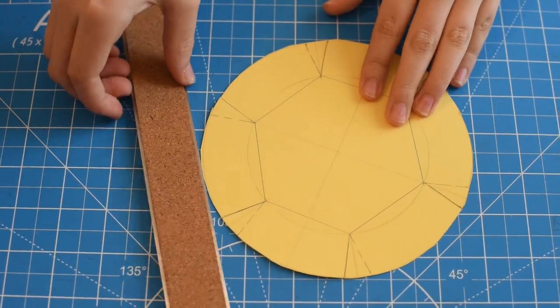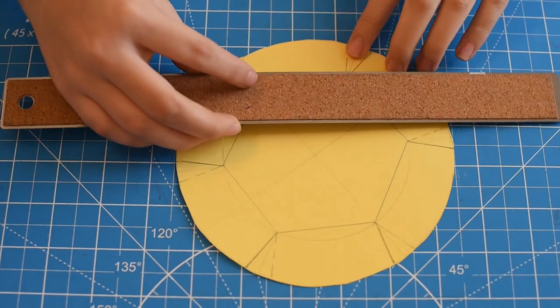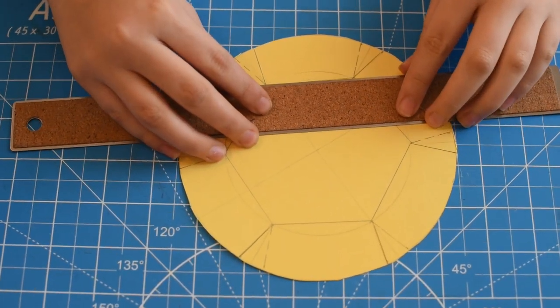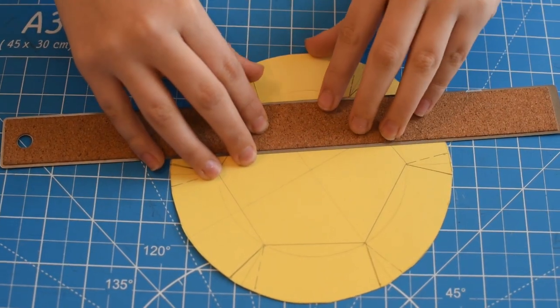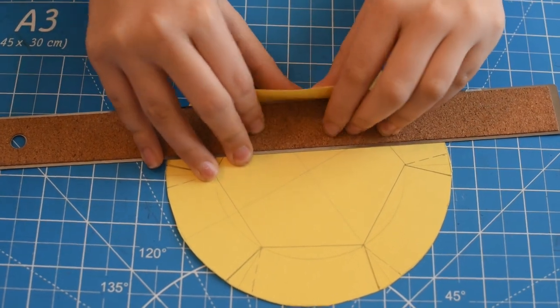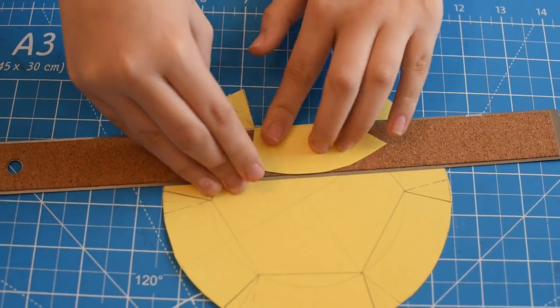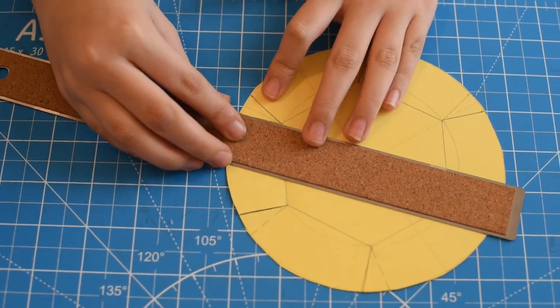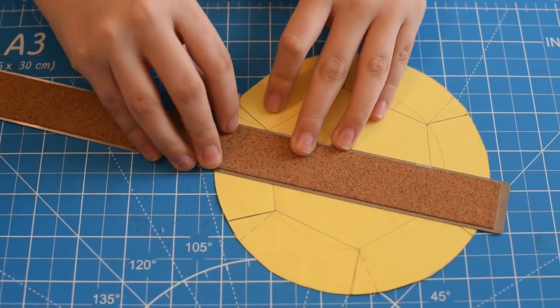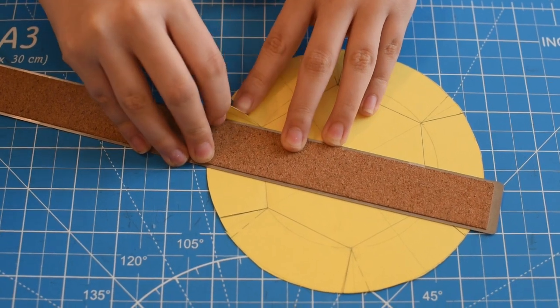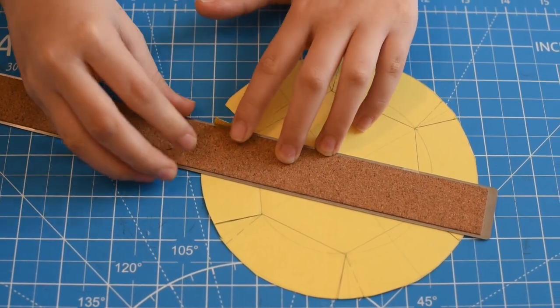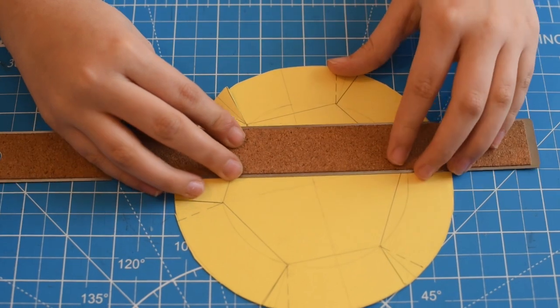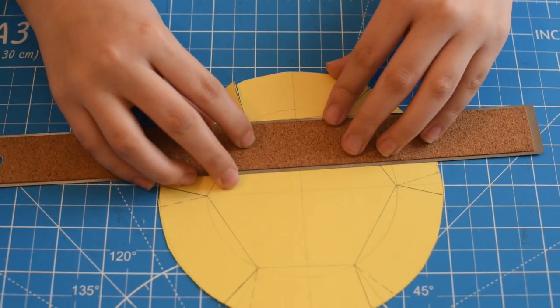Now we're going to use our ruler to make our folds. Now remember, I always tell this, this is just an optional way of doing it, but we find that it makes our lines a little sharper. So we use a ruler initially and then we reinforce our folds with the back end of the ruler or the back of our nail or something just to make really nice crisp lines.